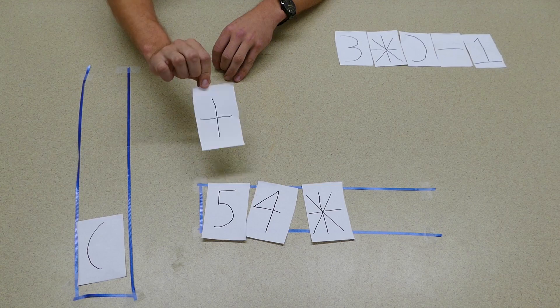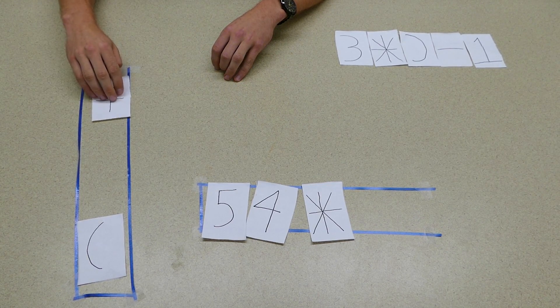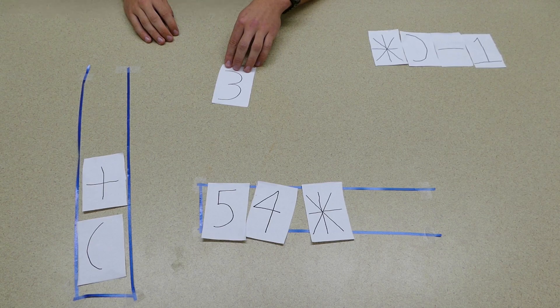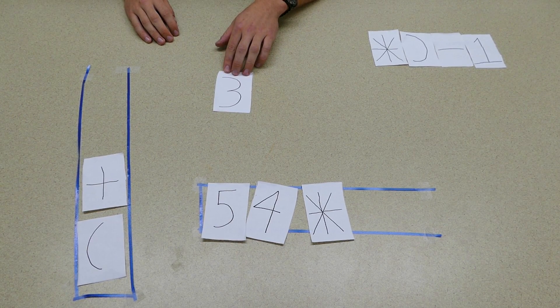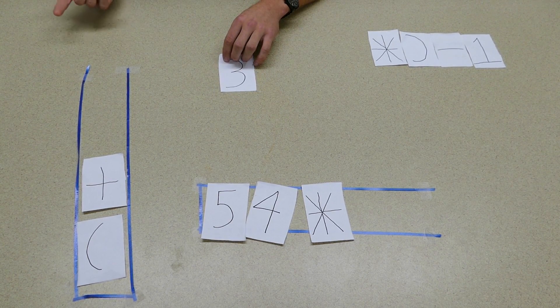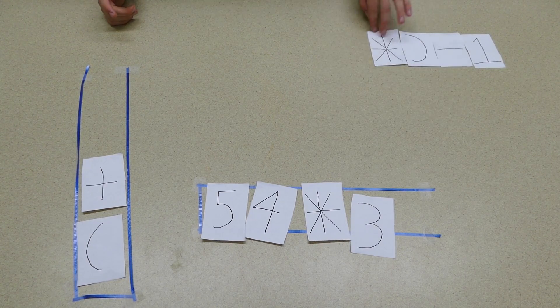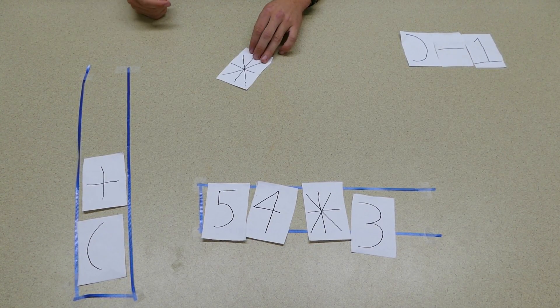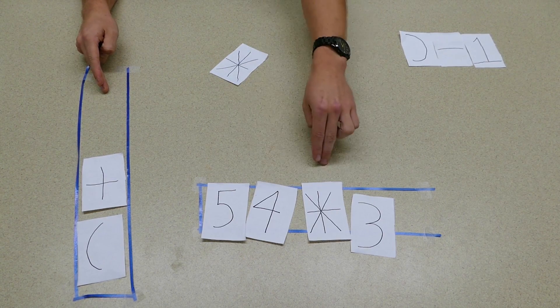Next we have this cute little 3, and it's a number, so we don't even need to think—we just enqueue it. Next we have a multiplication sign. Now the game has changed. Remember: stack is LIFO, queue is FIFO.